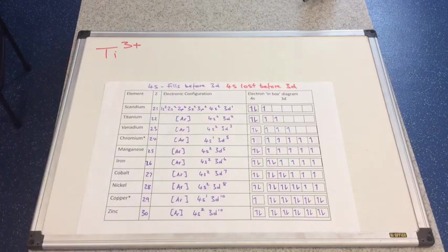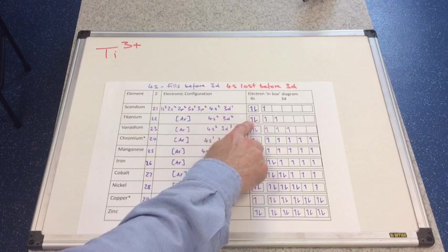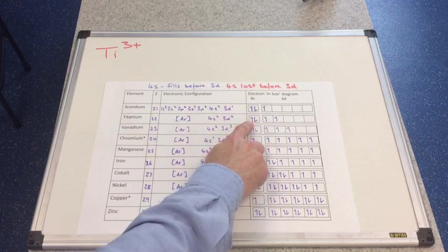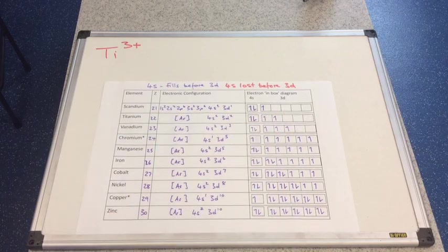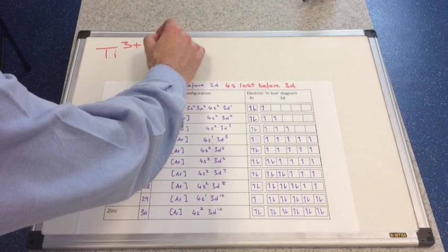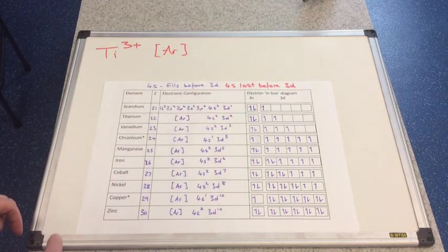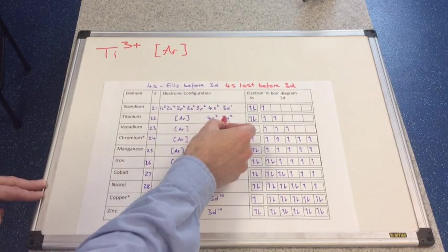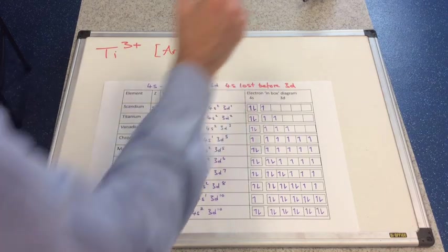So which electrons will it lose? Well, it's going to lose these two first, so it won't have any 4s electrons. And it's going to lose one of these 3d electrons. So titanium 3+ has this configuration. Argon, remember we're losing 4s first, so there's two gone from there. We'll lose one of those, so it's 3d1.